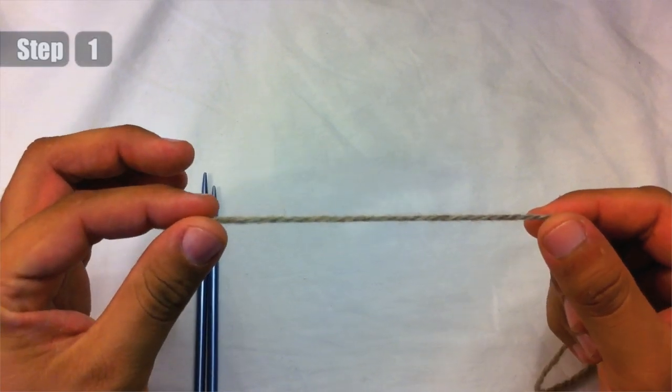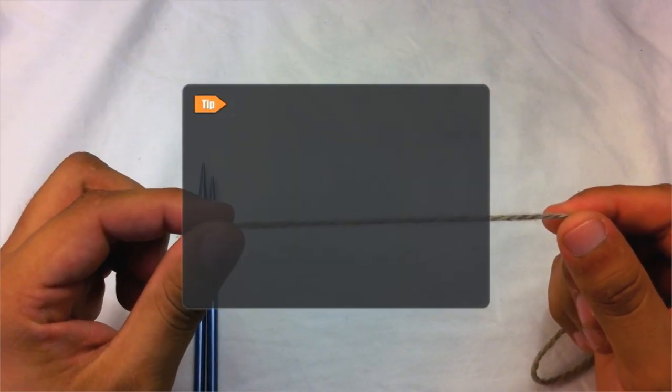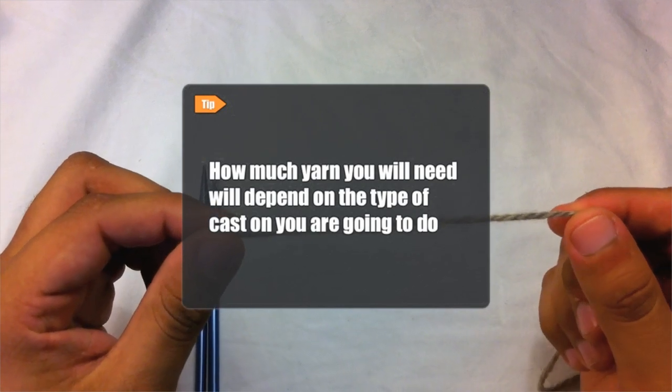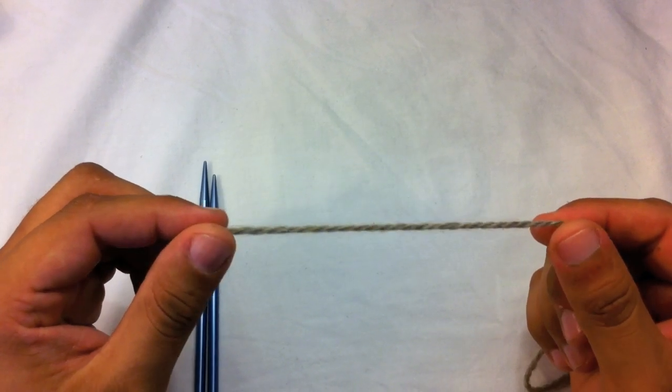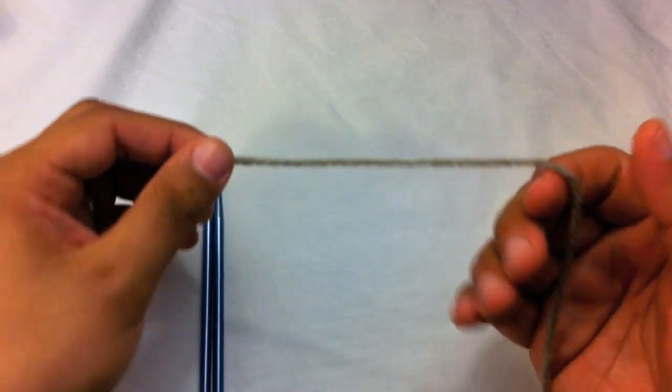Step 1. Pull out a length of yarn from your ball. How much you need will depend on the type of cast on you plan to do. This is called the tail of the yarn.